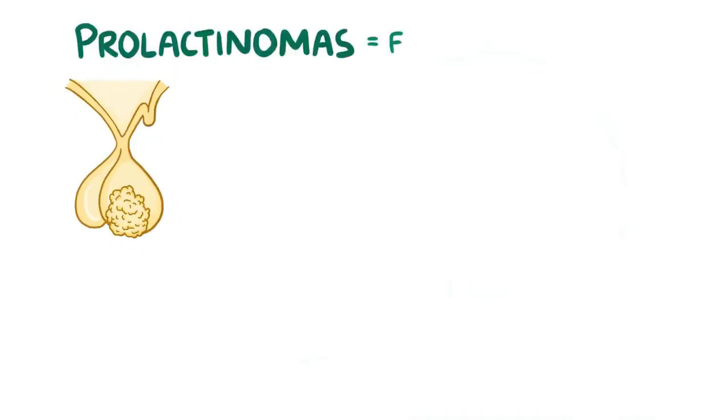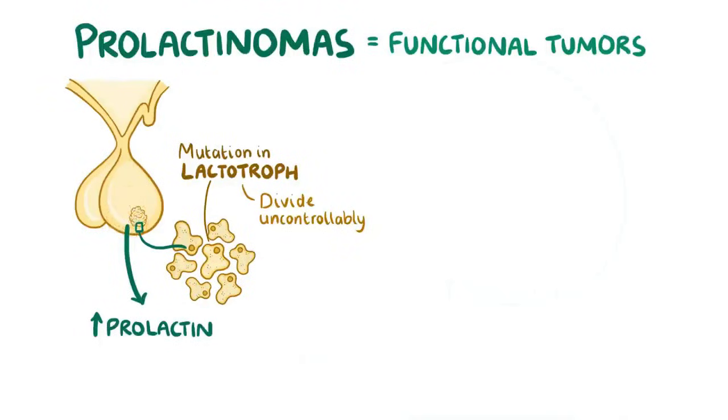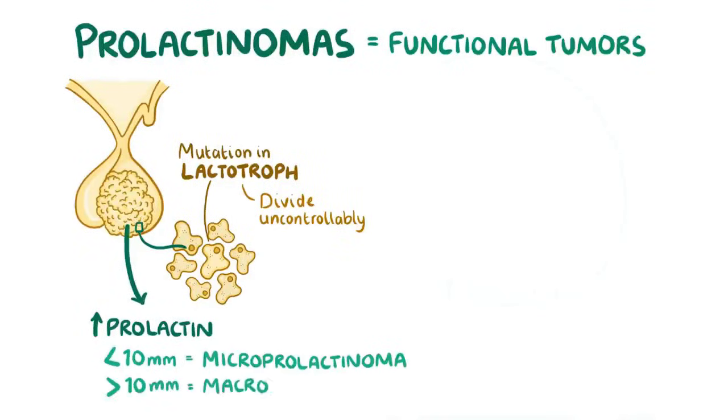Prolactinomas are functional tumors, meaning that they secrete high levels of prolactin, and they typically form when there's a mutation in the lactotroph cells of the anterior pituitary that allows the cells to divide uncontrollably. The key is in the size with these things. Prolactinomas that are less than 10 mm in diameter are considered microprolactinomas, whereas those that are greater than 10 mm are called macroprolactinomas.